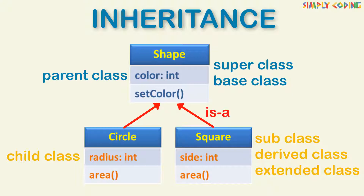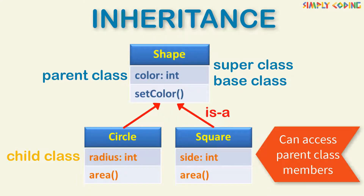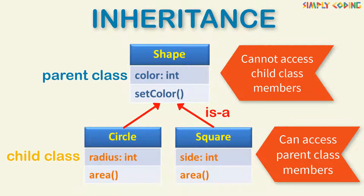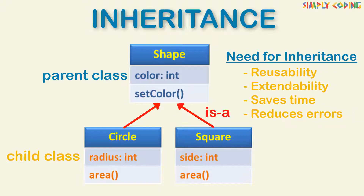The arrow shows the inheritance relationship between the classes, or an 'is-a' relationship. It represents that Circle is a type of Shape. So the circle can access Shape's variables and methods, but Shape cannot access anything of the child class. One of the major reasons we need inheritance is reusability — it allows us to reuse tried and tested existing code and extend it further to our requirements, saving time and reducing errors.